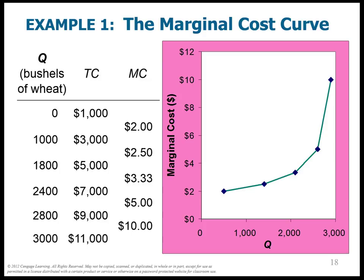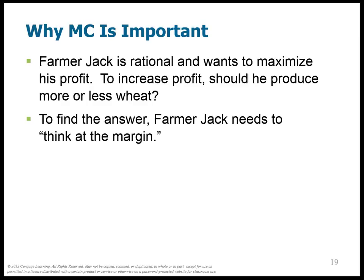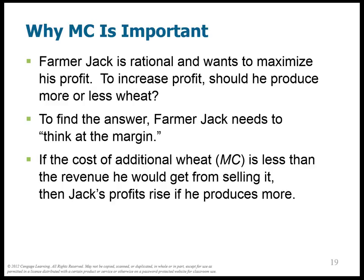Farmer Jack always has to ask: should I produce one more bushel of wheat? Every time he does, he wants to compare the marginal cost to the marginal revenue — thinking at the margin. If the cost of producing one additional unit of wheat, that's the marginal cost, is less than the revenue he would get from selling it, he should definitely produce more wheat. And so we need to think about fixed and variable costs. Fixed costs do not vary with the quantity of output produced.